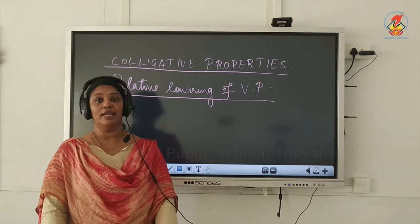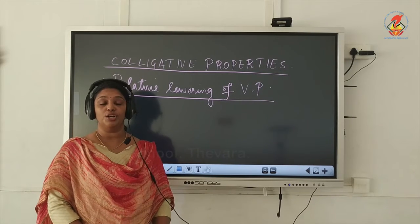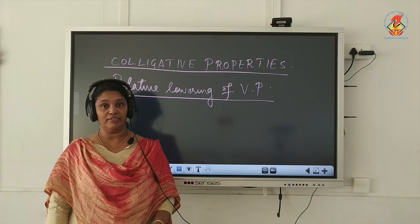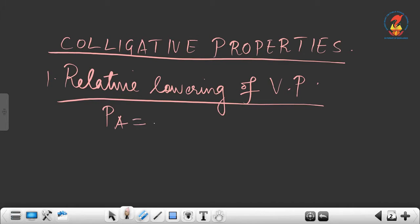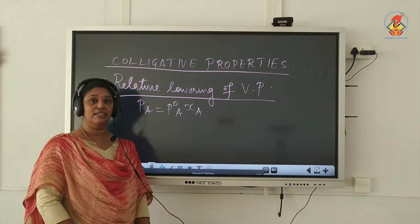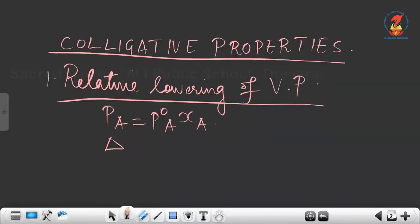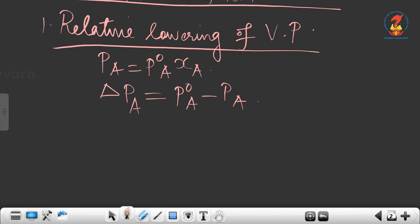Now we are going to start the derivation. We know that the vapour pressure of a solution is lower than the vapour pressure of pure solvent. According to Raoult's law, Pa = P°A × XA. When a non-volatile solute is added to the solvent, the vapour pressure of the solution decreases. That reduction in vapour pressure is denoted by delta Pa, where delta Pa = P°A − Pa.